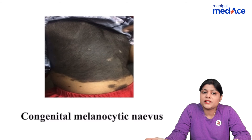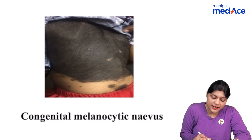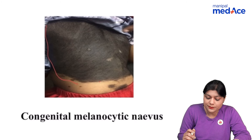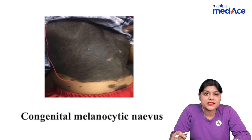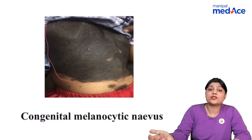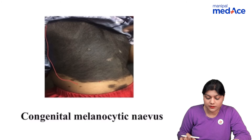Congenital melanocytic nevi — patients have this black nevus with hypertrichosis. Remember, when more than 20 centimeters in size, it has a tendency to turn into malignant melanoma.